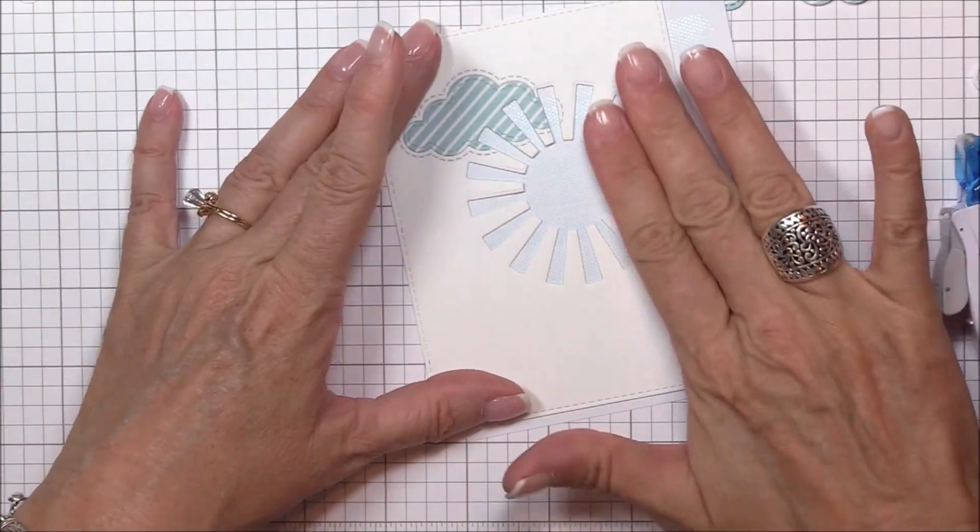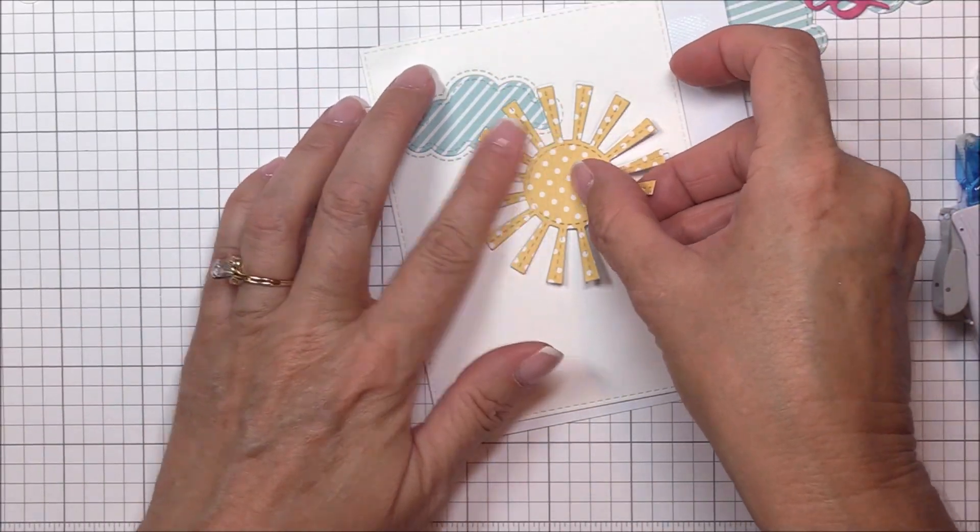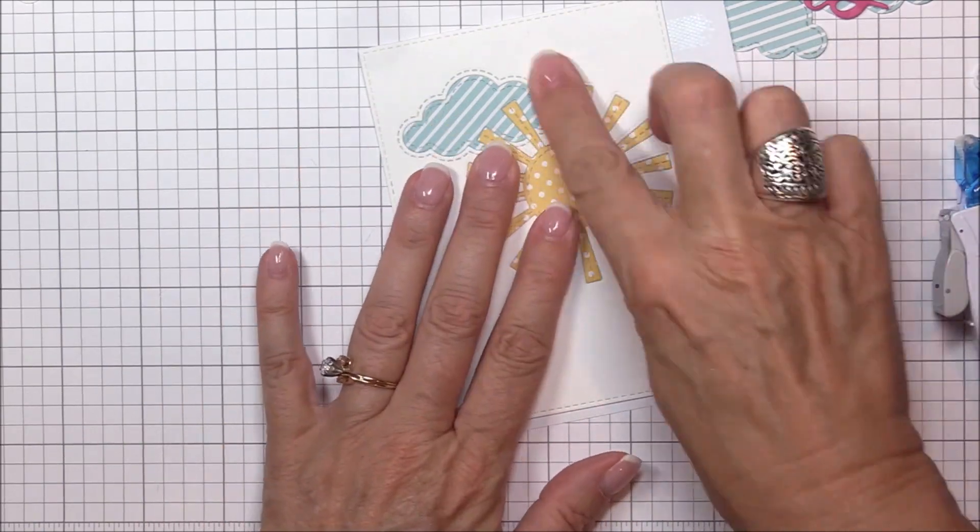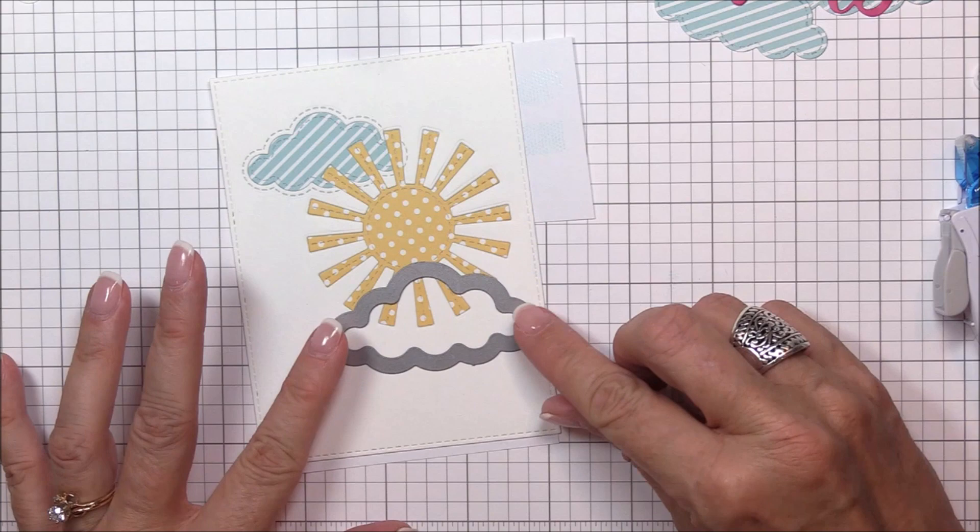Inlaid die cutting is really easy to do, and once you get the hang of it, it's fun to figure out other ways to incorporate it into a design. I'm creating a sunny sky scene here, but you can use this technique with any die cut images.